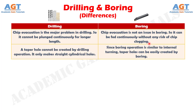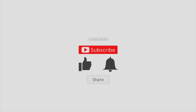Difference number 8: A taper hole cannot be created by drilling operation — it only makes straight cylindrical holes — whereas since boring operation is similar to internal turning, taper holes can be easily created by boring.